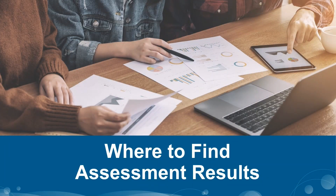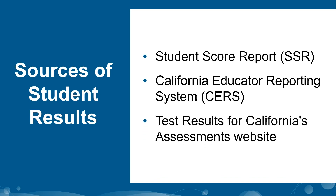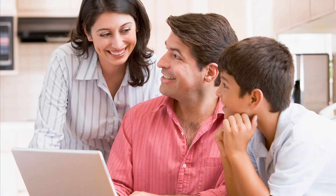Now that we've talked about the types of scores available for the CAST, let's review where you can get these scores. Student results from the CAST are available in several locations: Student Score Reports, the California Educator Reporting System or CERS, and the Test Results for California's Assessments website. Many districts choose to deliver student score reports electronically, granting parents secure access through the School Information System or Parent Portal. LEAs can request score reports in several different languages using TOMS. More information can be found on the Starting Smarter webpage, available in English and Spanish.